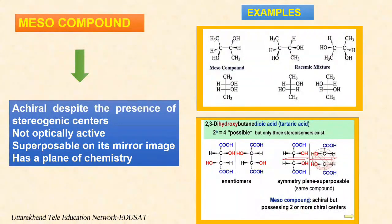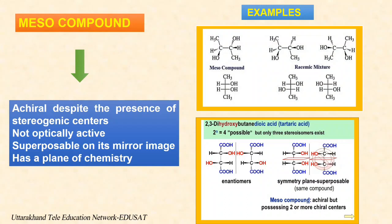A meso compound is a non-optically active member of a set of stereoisomers, at least two of which are optically active. This means that despite containing two or more stereogenic centers, the molecule is not chiral. The meso compound is superimposable on its mirror image. All meso compounds have an internal plane of symmetry that bisects the molecule — each half is a mirror image of the other half. For example, tartaric acid contains two chiral carbon atoms. Four forms of tartaric acid are known, of which two are optically active and two are optically inactive. The two optically active forms are mirror images of each other but not superimposable — that is, they are enantiomers. The other two forms possess a plane of symmetry and are optically inactive, called meso isomers.